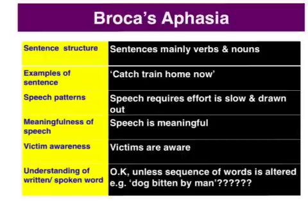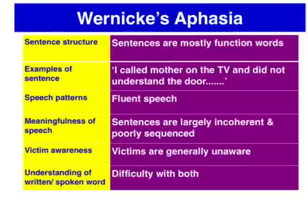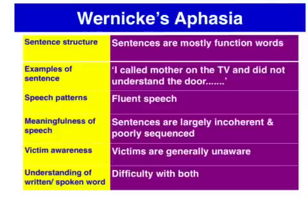The victim of Broca's aphasia is aware of their condition and frustrated by it. In terms of someone suffering from Wernicke's aphasia, their sentences are mainly comprised of functional words, their speech is fluent, but largely incoherent because it lacks those key content words. The victims are generally unaware of their condition and are substituting random or invented words, and they do have difficulty understanding both the written word and the speech of others.